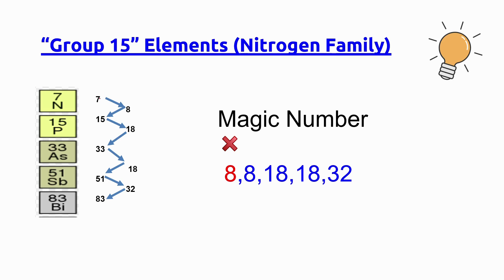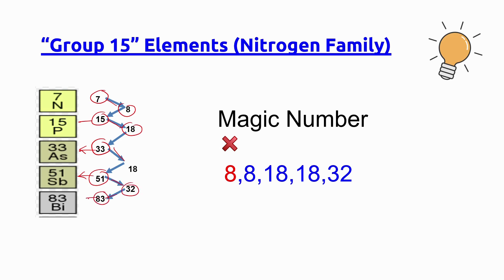Now let's practice writing the group 15 elements, also known as the nitrogen family, with the help of the magic number concept. The atomic number for nitrogen is 7. 7 plus 8 gives 15, which is the atomic number for phosphorus. 15 plus 18 gives 33, the atomic number for arsenic. 33 plus 18 gives 51, the atomic number for antimony. 51 plus 32 gives 83, the atomic number for bismuth.